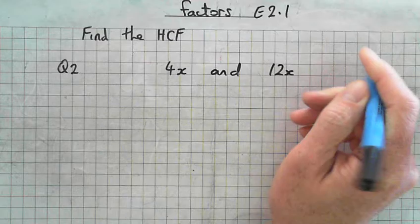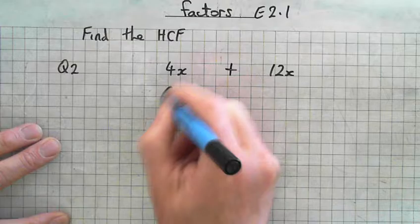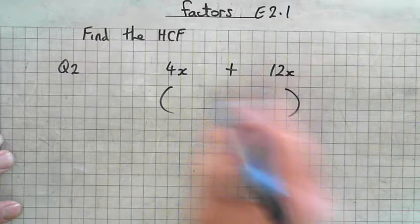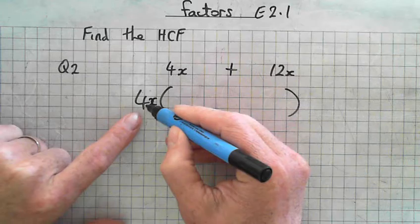Alright, so factors. So this is question 2. Going back over question 2 again. Find the highest common factors of 4x and 12x. What's and? Plus.